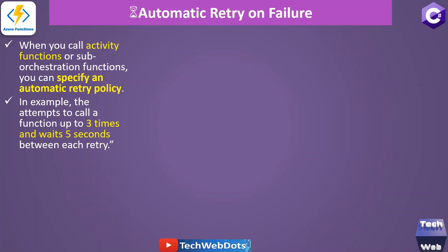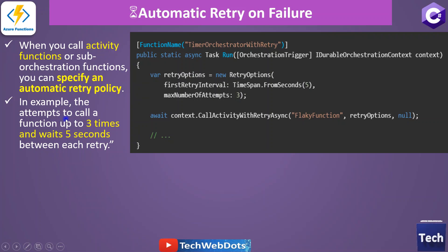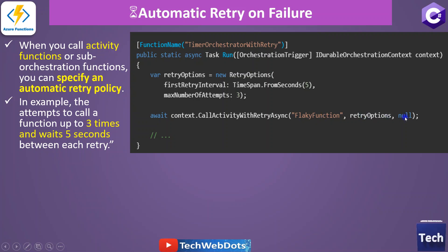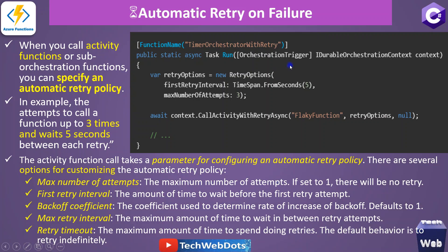In another scenario, you may need automatic retry. When you call activity functions or sub-orchestration functions, you can specify an automatic retry policy. In this example, we attempt to call a function up to three times and wait five seconds between each retry. This is our function — TimerOrchestrationWithRetry — and we are creating a RetryOptions object, specifying a TimeSpan of five seconds and a maximum of three attempts.